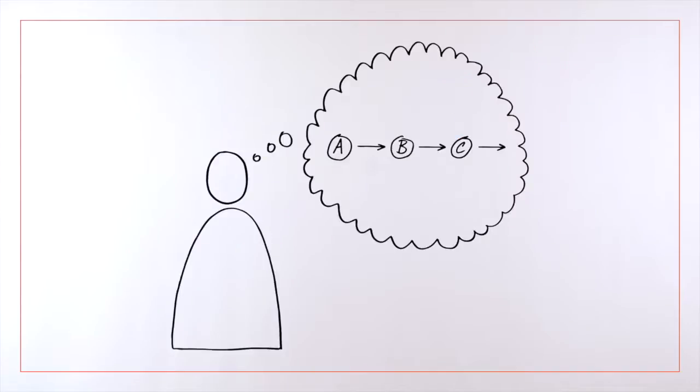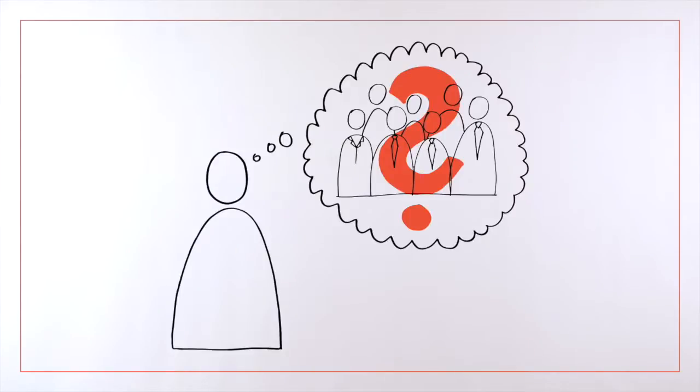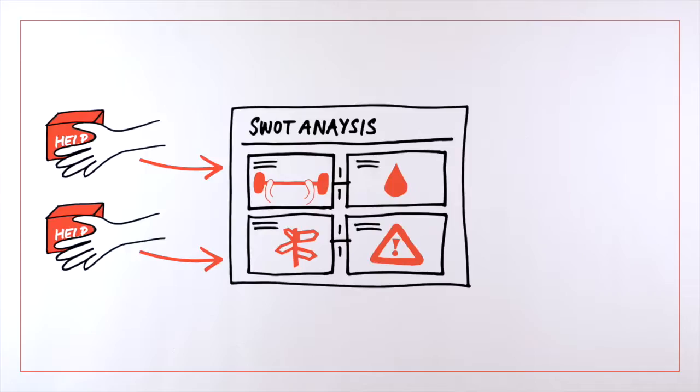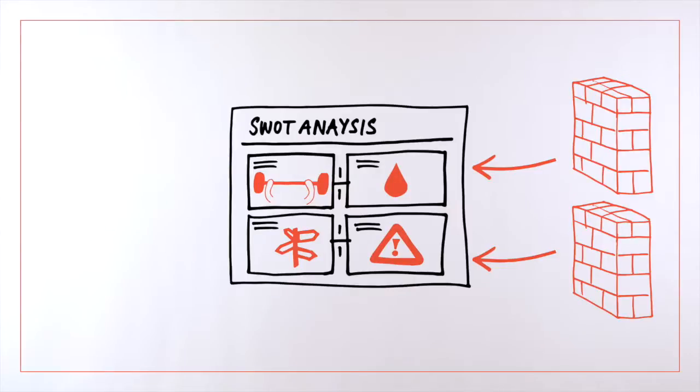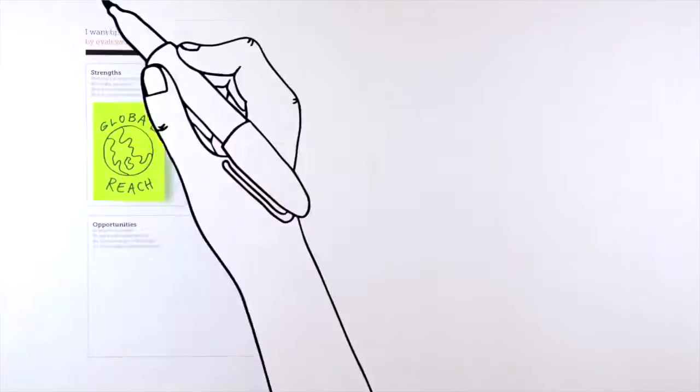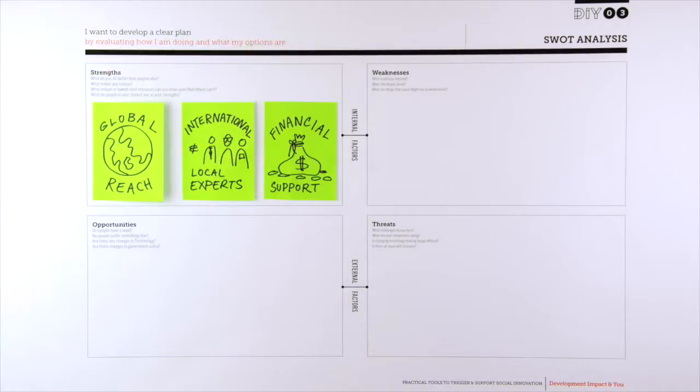He thinks of the best way to plan what he needs to do and who he needs to ask for help. Pablo thinks he could start by identifying all the factors that will help his organization and all the obstacles that will make his task more difficult. He begins with the strengths, the elements of his organization that make them particularly well placed to respond to the crisis.